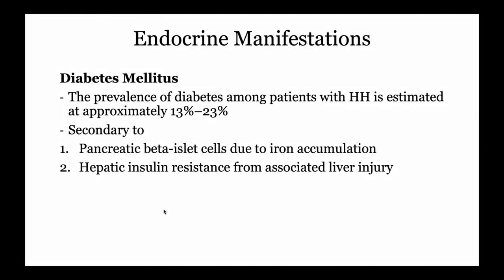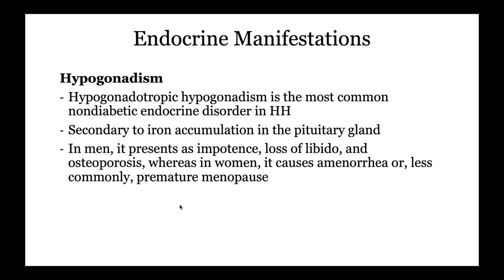Diabetes can develop due to iron overload, occurring in about 13 to 23% of cases, through two mechanisms: iron accumulating in pancreatic beta cells causing toxic damage and decreased insulin production, and hepatic damage driving insulin resistance. Hypogonadism is also important — iron accumulates in the pituitary gland, causing hypogonadotropic hypogonadism, which is the most common non-diabetic endocrine disorder in hemochromatosis. In men it presents with impotence, loss of libido, and osteoporosis; in women with amenorrhea or premature menopause.